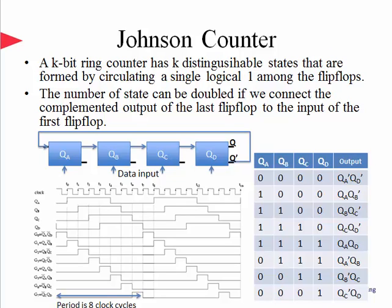Johnson counter can still suffer from external noise and could get into one of the disallowed states. Once in those states, the counter's behavior could be very unpredictable. Therefore, in real-life applications, some form of logic should be included to fix the counter in case it gets into one of those disallowed states.